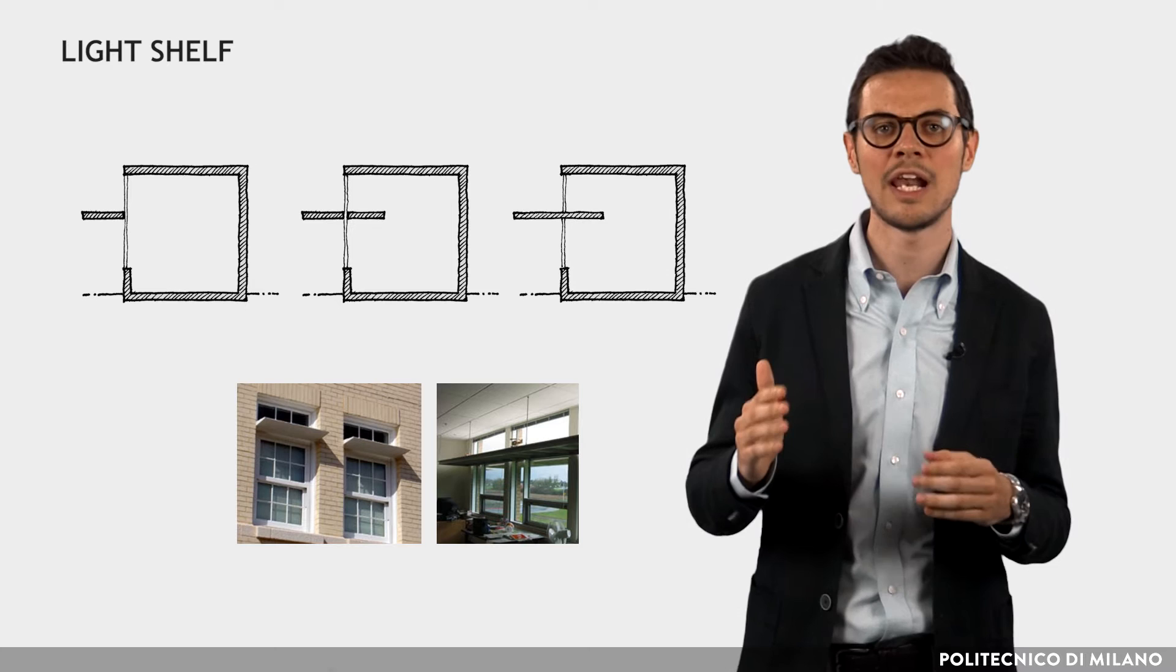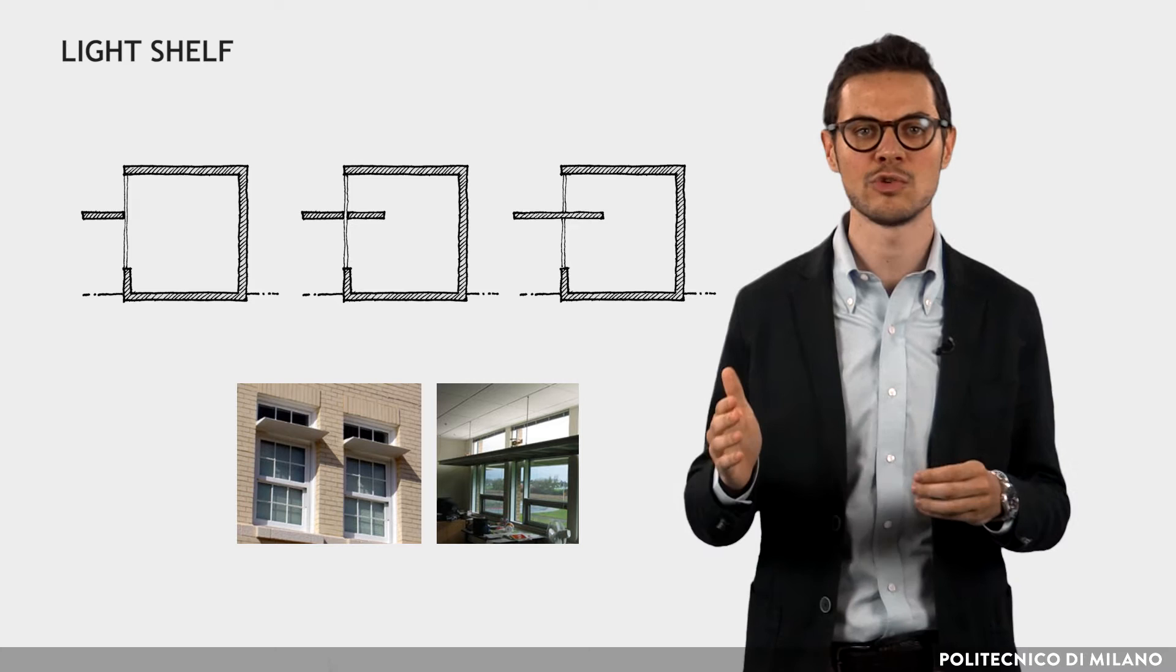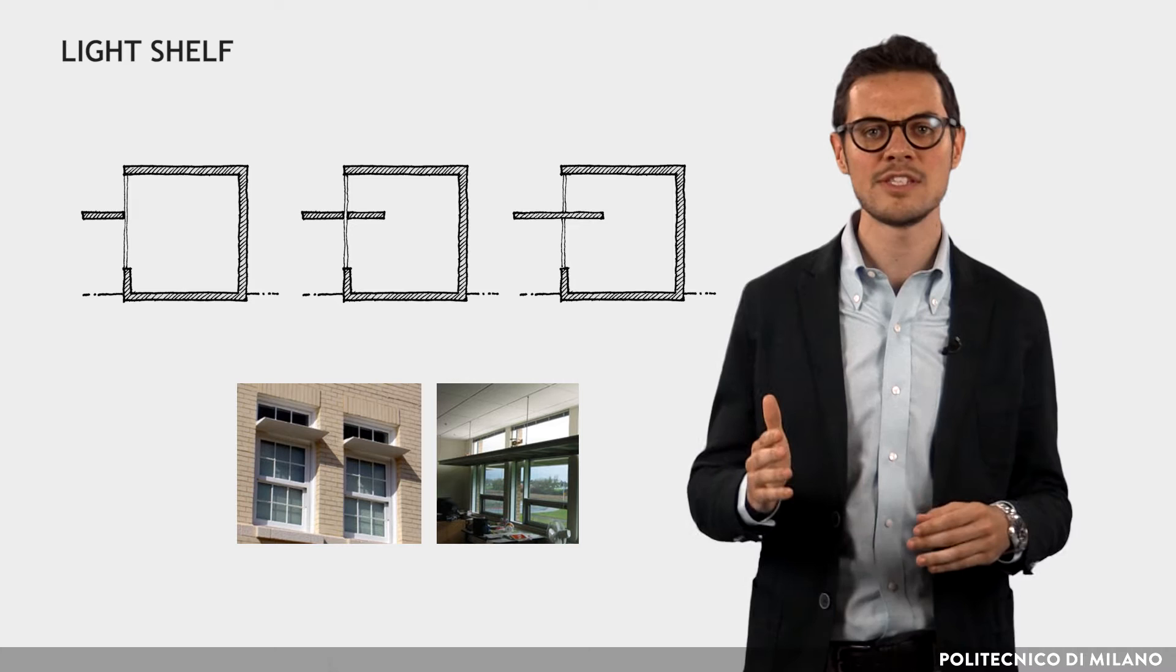A more advanced system consists of the so-called light shelf, which is a well-established way to facilitate the penetration of light into a room and to protect from direct glare.